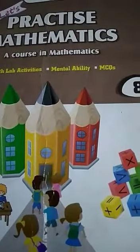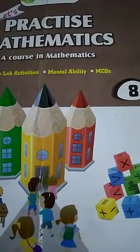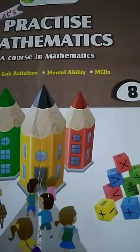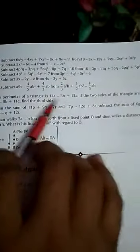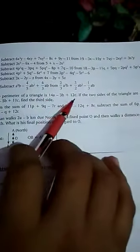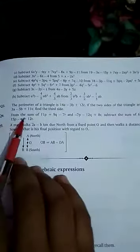Hello dear students, we will study now Chapter number 12, Algebraic Expressions, Exercise 12.2, Question number 3. Question number 3: The perimeter of a triangle is 40a - 3b + 12c. If the two sides of the triangle are 4a + 6b - 8c and 3a - 5b + 11c...